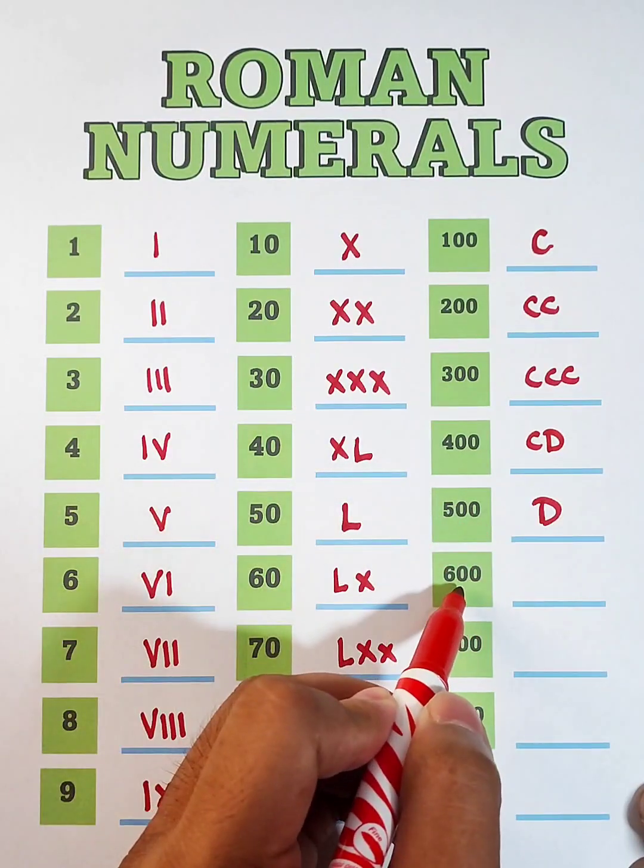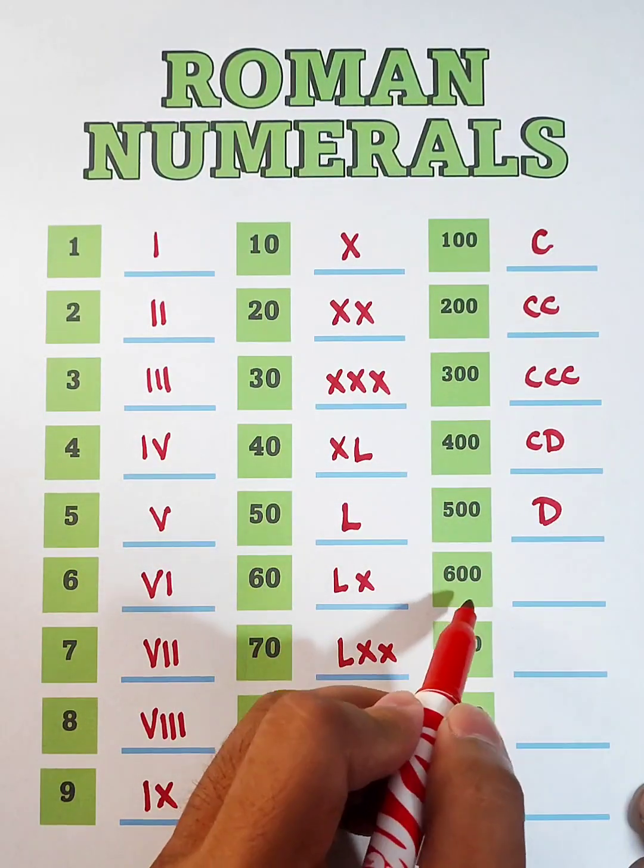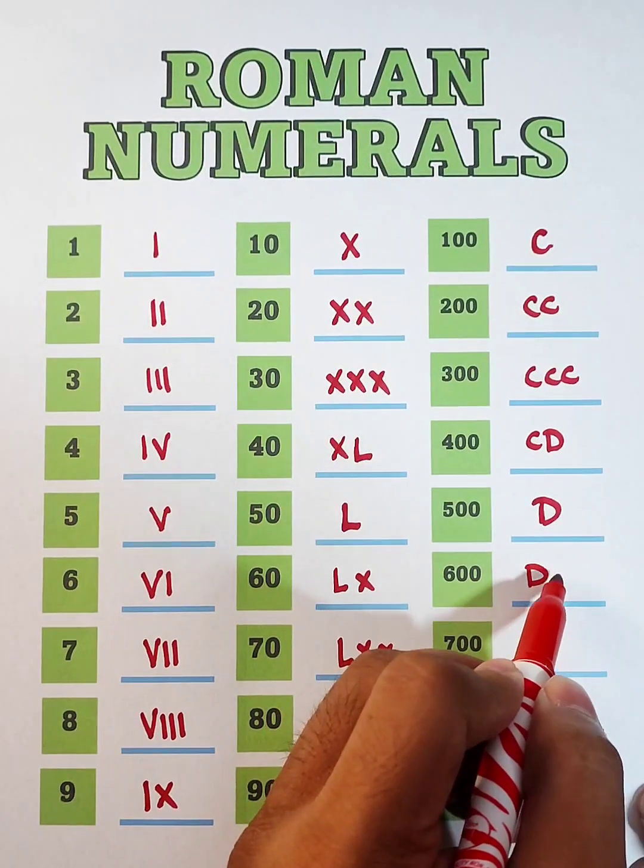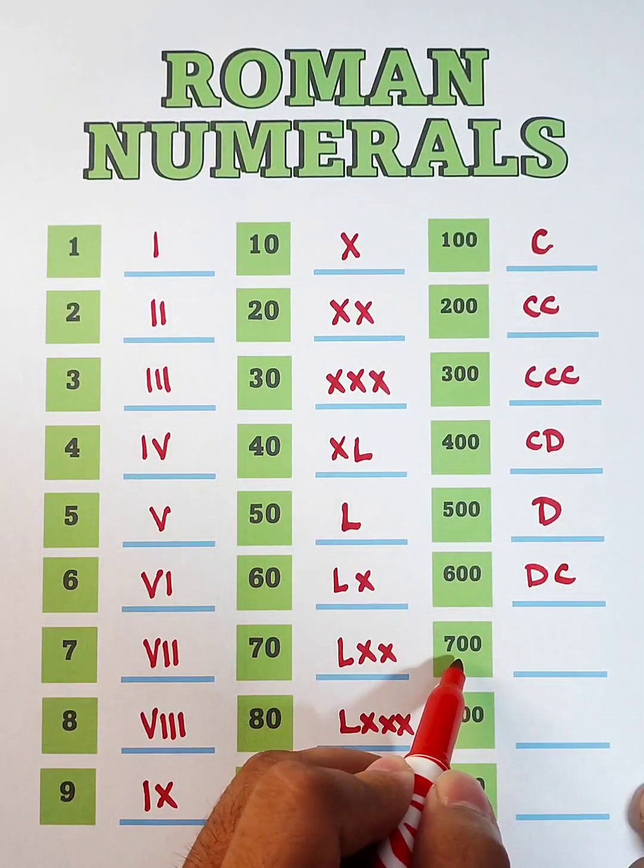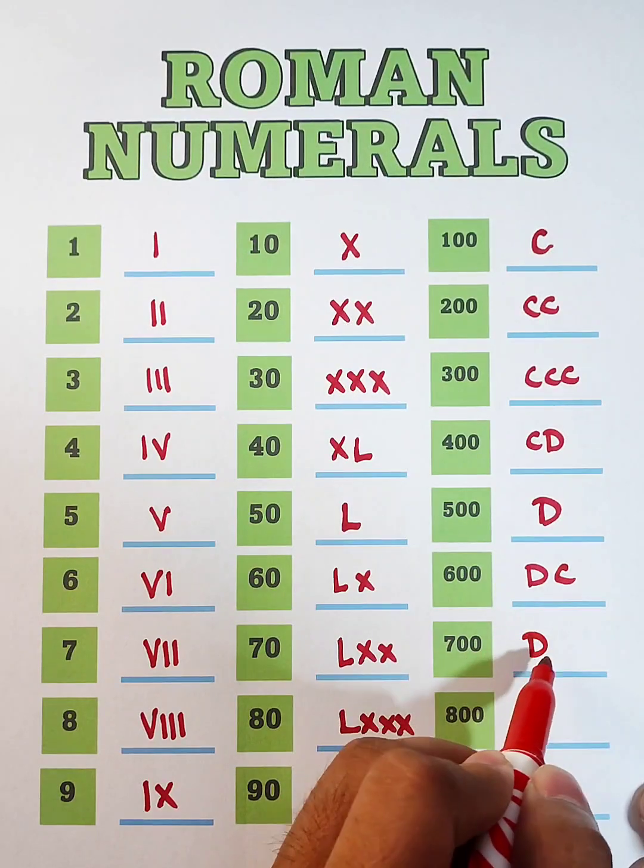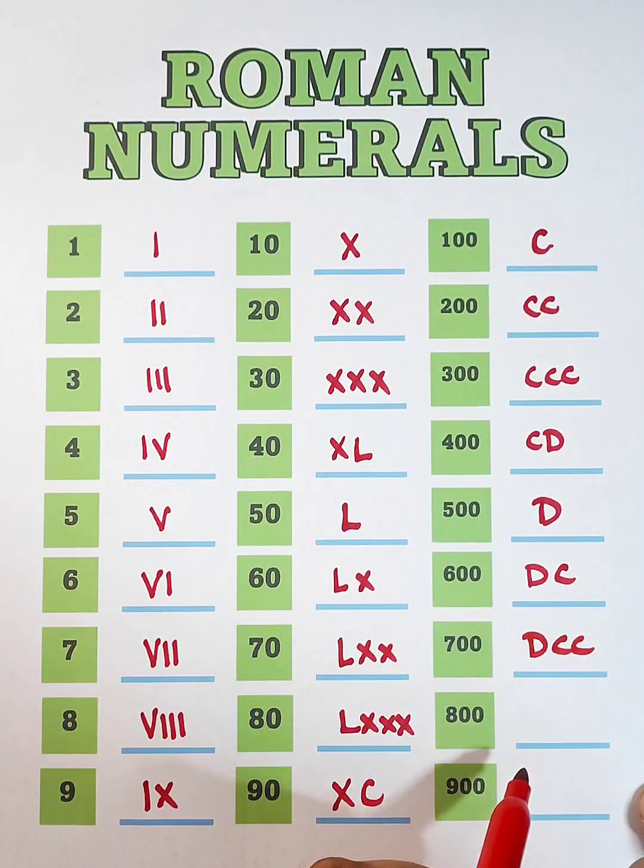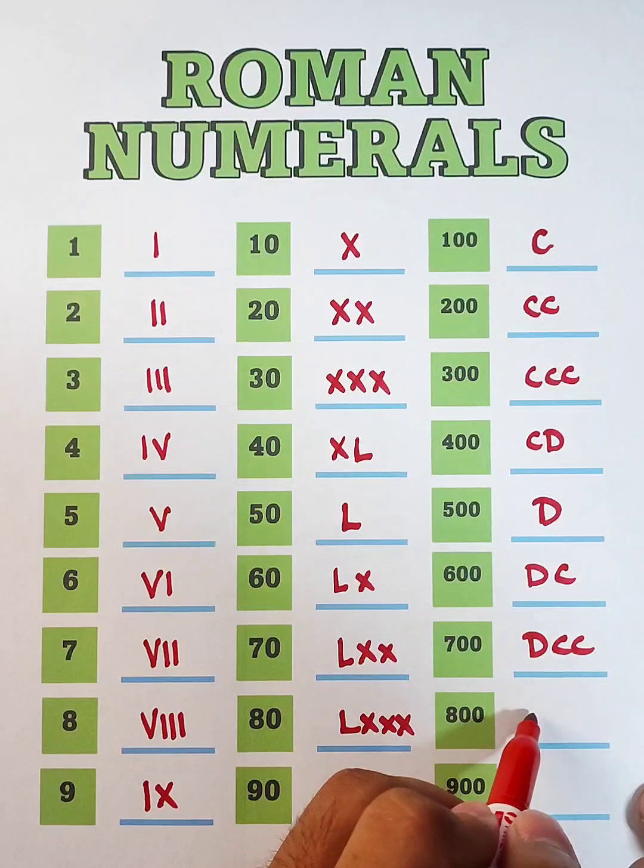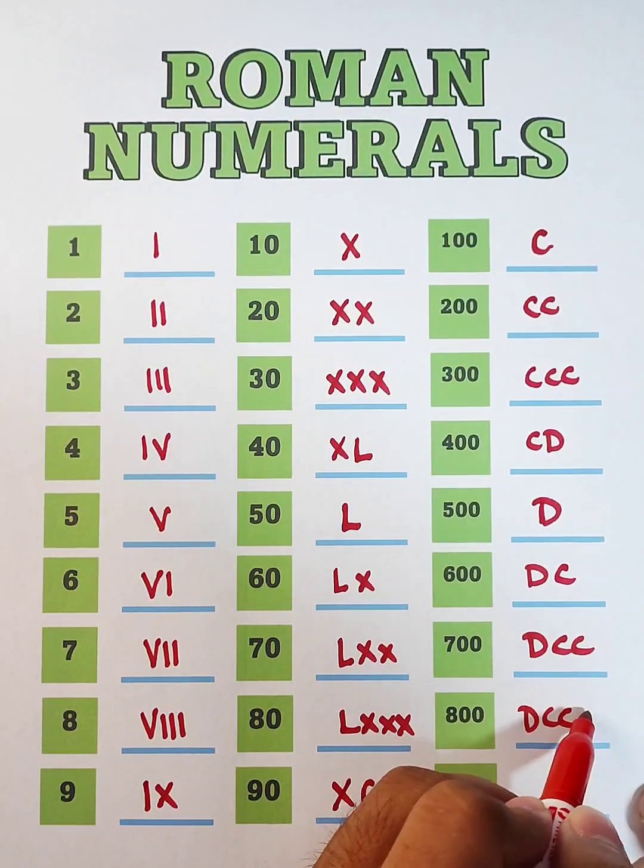Next, for 600, using your letter D as 500, that is 500 plus 100. For 700, that would be 500 plus 200, that is D, C, and C. And for 800, that is D, C, C, and C.